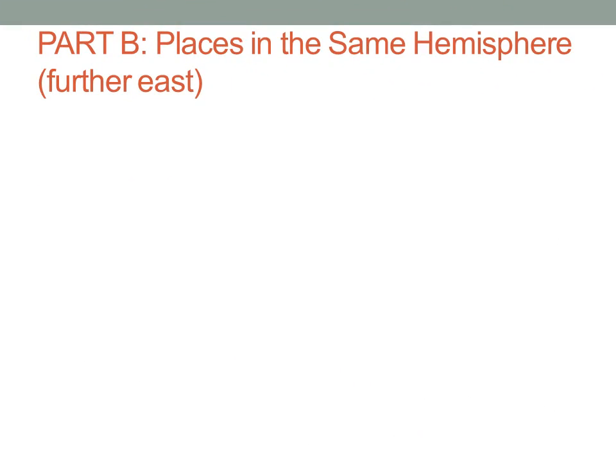This brings us to our next section, Part B: places in the same hemisphere. In this case, calculating the time of places for the east. Our first worked example states: if it is 3 p.m. at 45 degrees east, what time will it be at 75 degrees east? 45 degrees east is located closer to the Greenwich meridian than 75 degrees east. This means that 75 degrees east is further ahead in time.